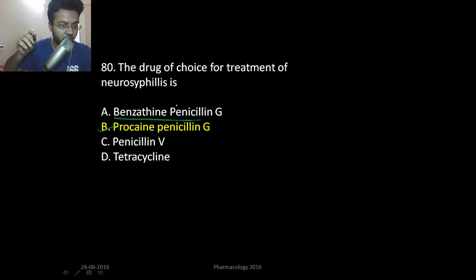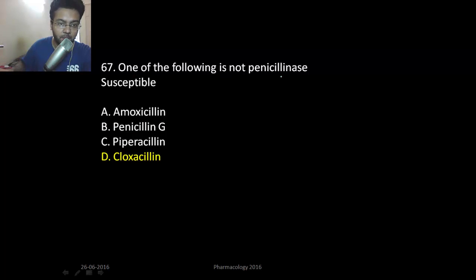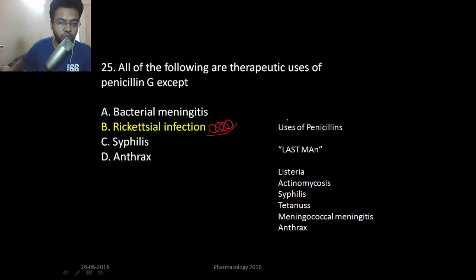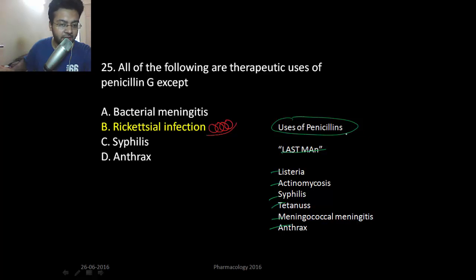Only anti-staphylococcal penicillins like cloxacillin are resistant to beta-lactamase. Piperacillin is useful against Pseudomonas. Uses of penicillin G include listeria, actinomycosis, syphilis, tetanus, meningitis, and anthrax.